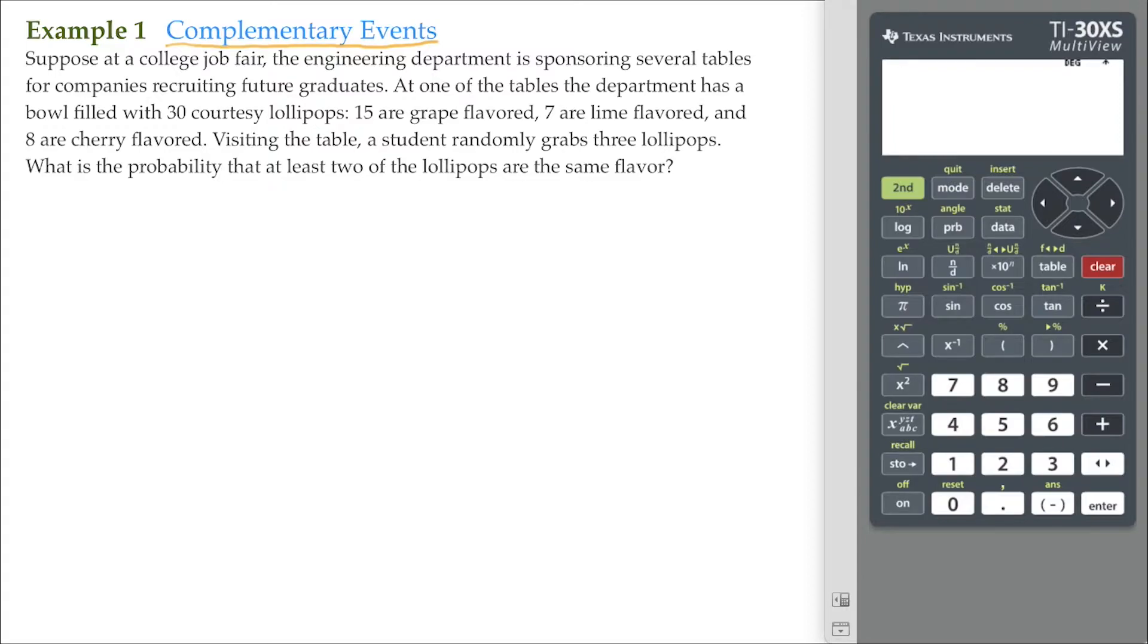The complement of an event is the probability that an event will not occur. For example, if I said there is a 30% chance that it will rain tomorrow, that also means there is a 70% chance that it will not rain tomorrow.